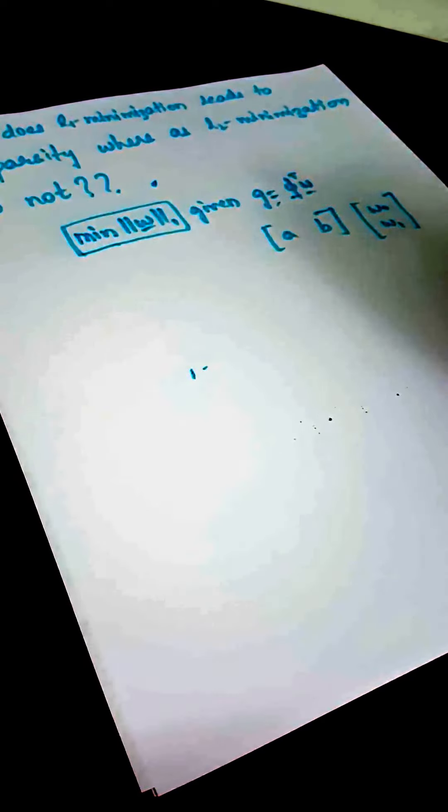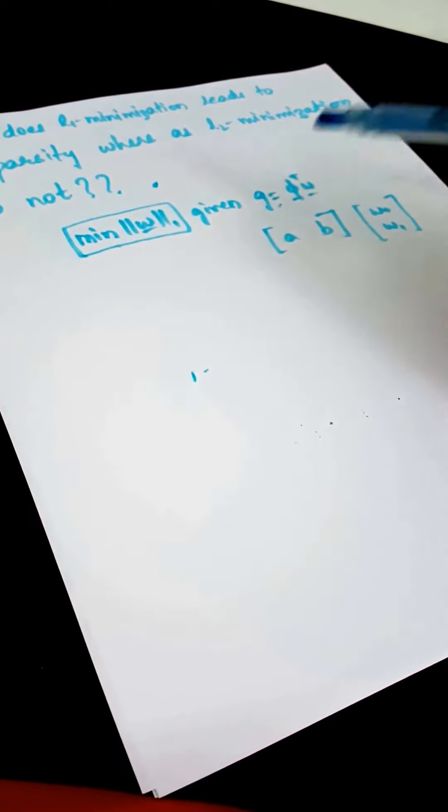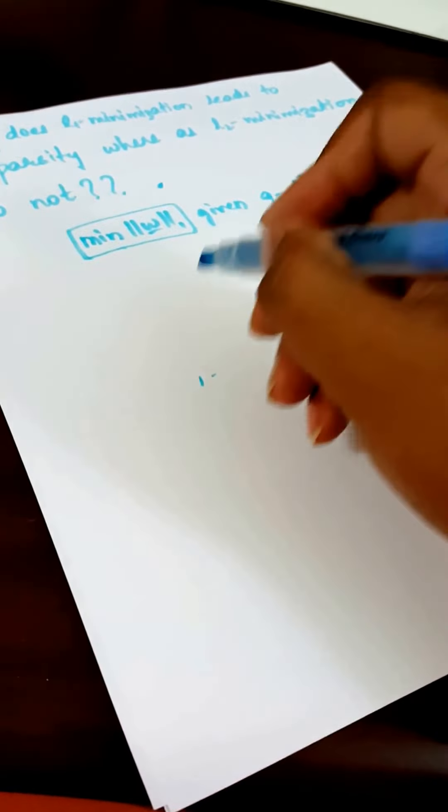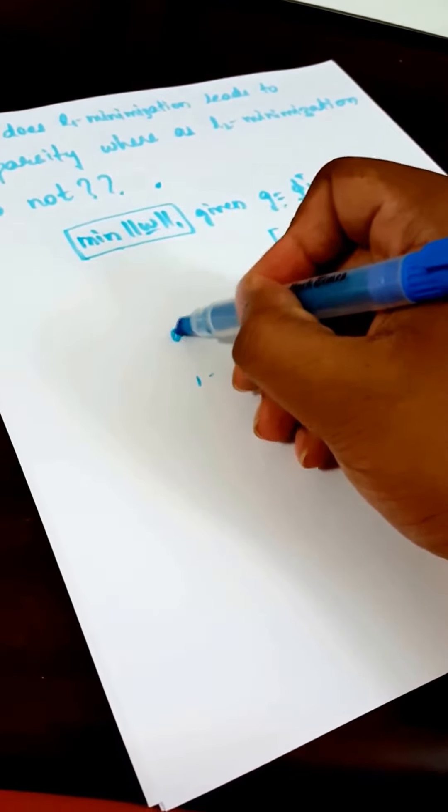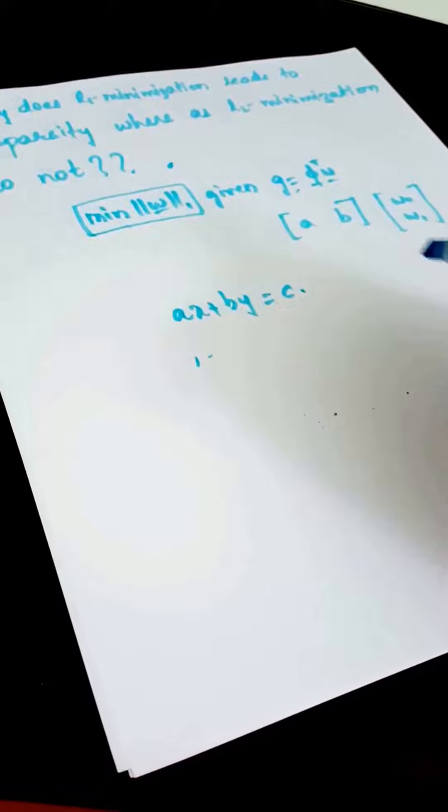W is a two-dimensional vector of coefficients W0 and W1. This gives me a line equation where, if G is a constant, you get aX plus bY equal to some C. So this is a line equation.